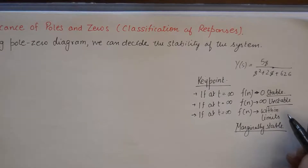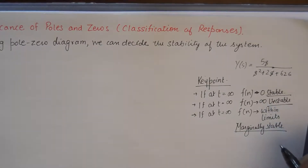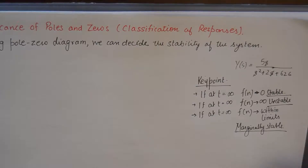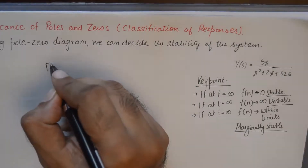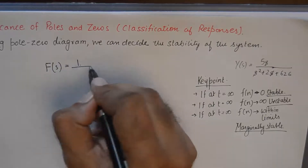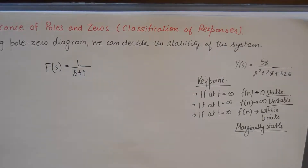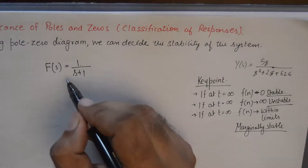The system should reach a stable value or a zero value when time approaches infinity — that will decide the criteria, and that can be found out in the time domain only. To illustrate this with an example: we have an expression like this for a network function.